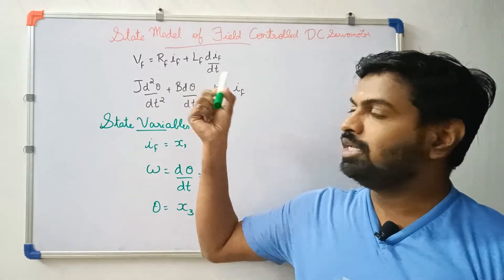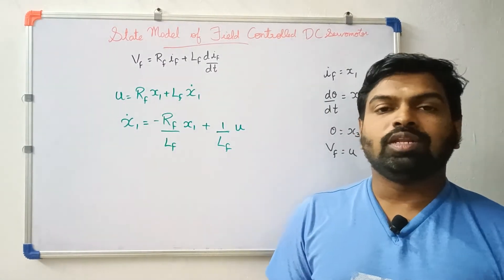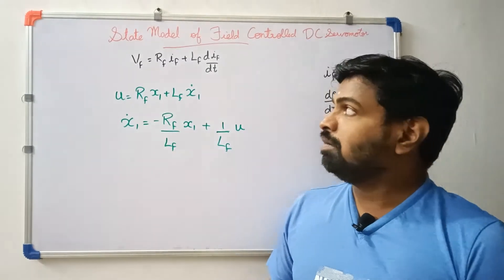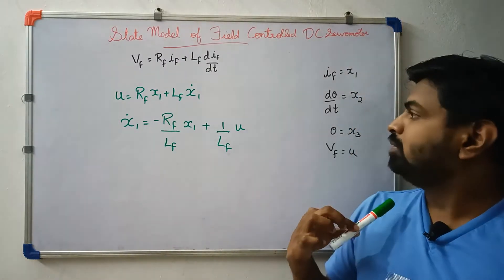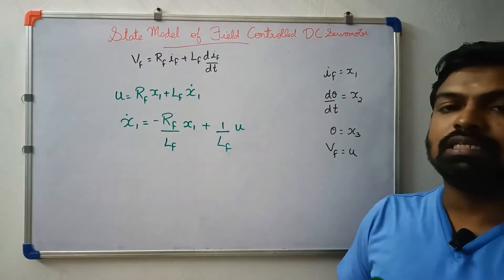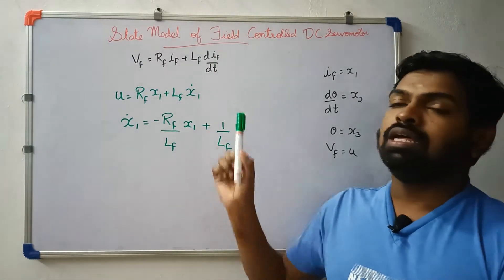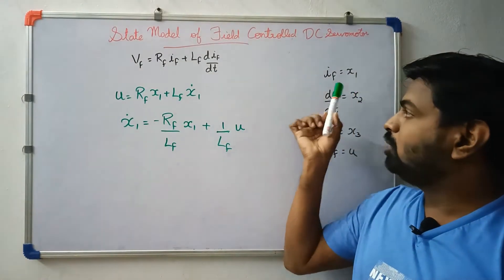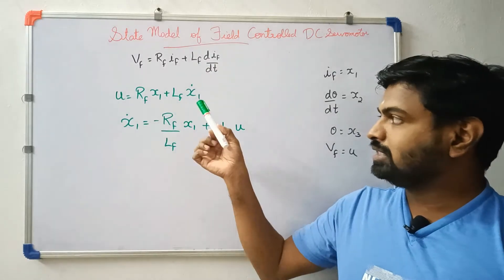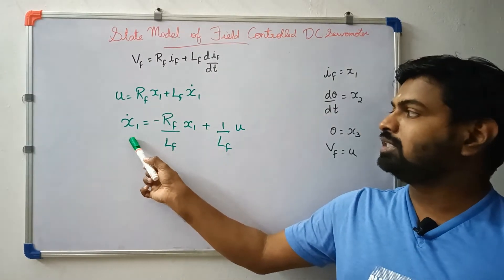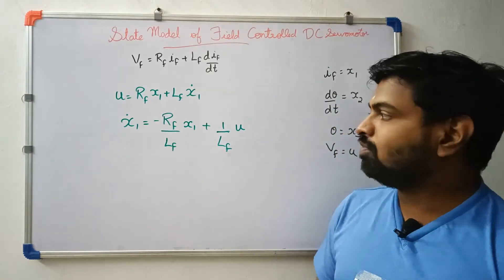Now we will substitute the state variables into the equations. The first equation is: Vf = Rf·if + Lf·(dif/dt). Solving this gives: x1_dot = −(Rf/Lf)·x1 + (1/Lf)·u. That is the first state equation.